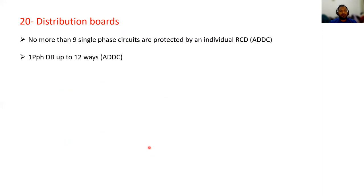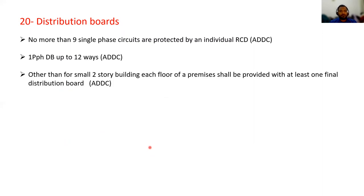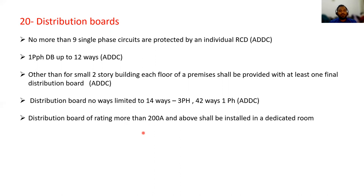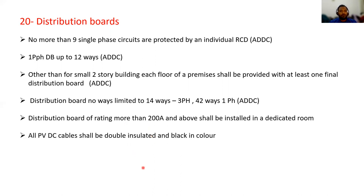Single-phase DB up to 12 ways as per ADDC. Other than for small two-storey buildings, each floor shall be provided with at least one final distribution board. Distribution boards: number of ways limited to 14 ways for three-phase and 42 ways for single-phase as per ADDC. Distribution boards rated more than 200 amperes and above shall be installed in a dedicated room. All PV cables shall be double insulated and black in colour.